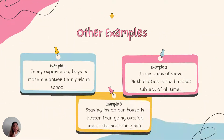Let's cite examples of opinionated statements. First: 'In my experience, boys are nuttier than girls in school.' The signal word here is 'my experience.' Example number two: 'In my opinion, or in my point of view, mathematics is the hardest subject of all time.' The cue here is 'my point of view.' Example number three: 'Staying inside our house is better than going outside under the scorching sun.' The cue here is 'better,' as it is comparing.